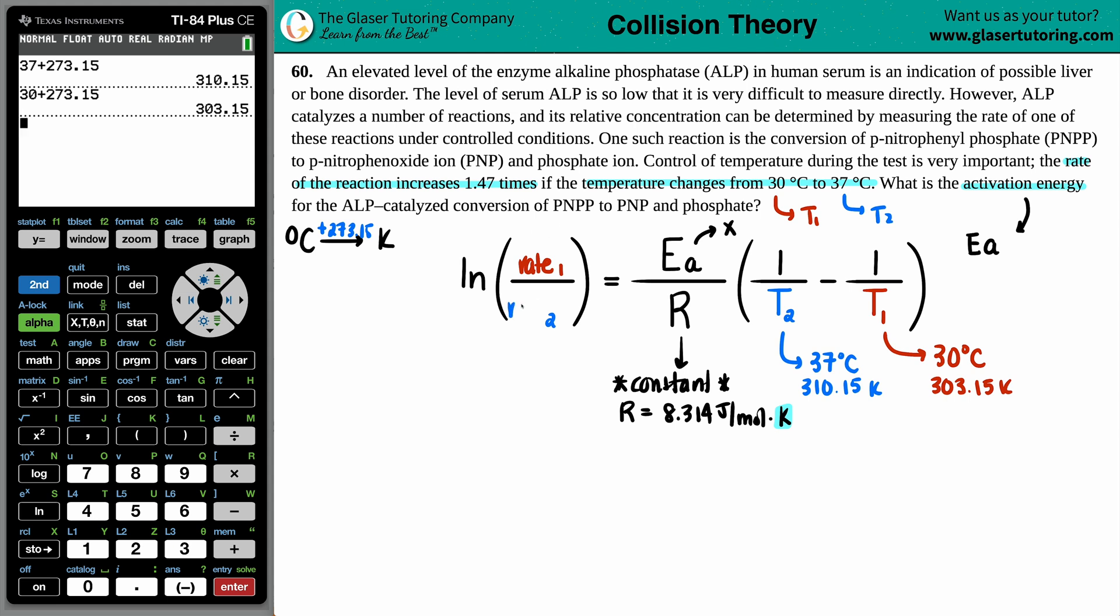And the 1s and the 2s, they have to go together with your 1s and your 2s in your temperature. So this temperature 2, the higher temperature, is going with rate number 2. And this lower temperature, T1, is going with rate 1.